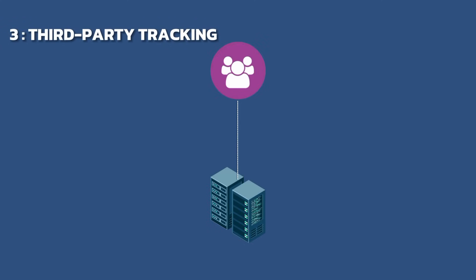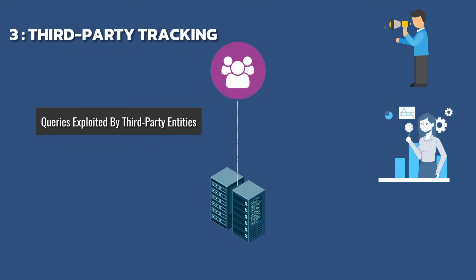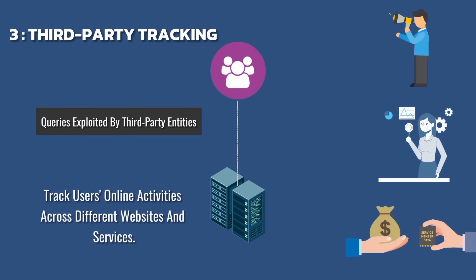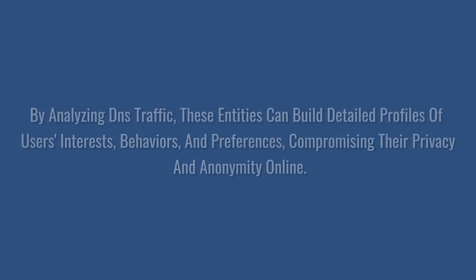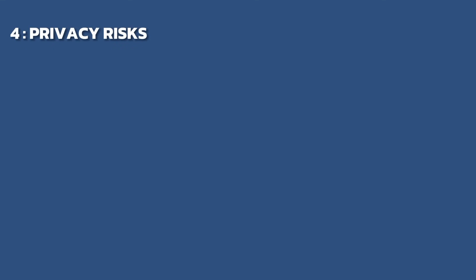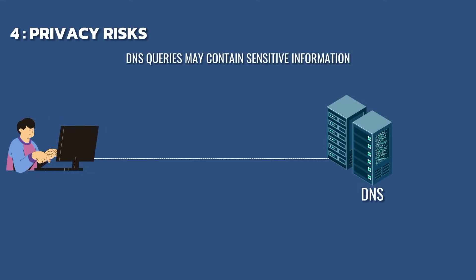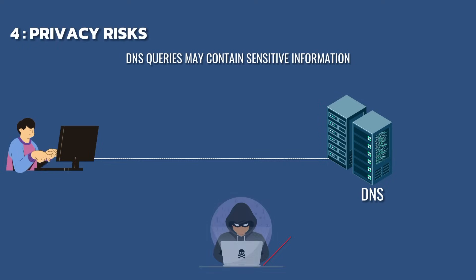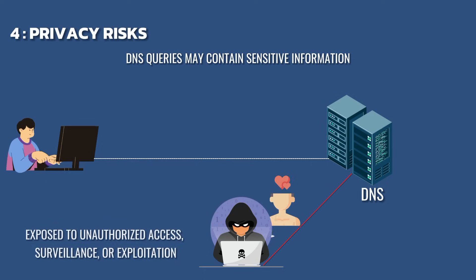DNS queries can also be exploited by third-party entities such as advertisers, analytics companies, and data brokers to track users' online activities across different websites. By analyzing DNS traffic, these entities can build detailed profiles of users' interests, behaviors, and preferences, compromising their privacy and anonymity. DNS queries may contain sensitive information including health conditions, financial transactions, or personal interests — without proper privacy safeguards, this information could be exposed to unauthorized access or exploitation.